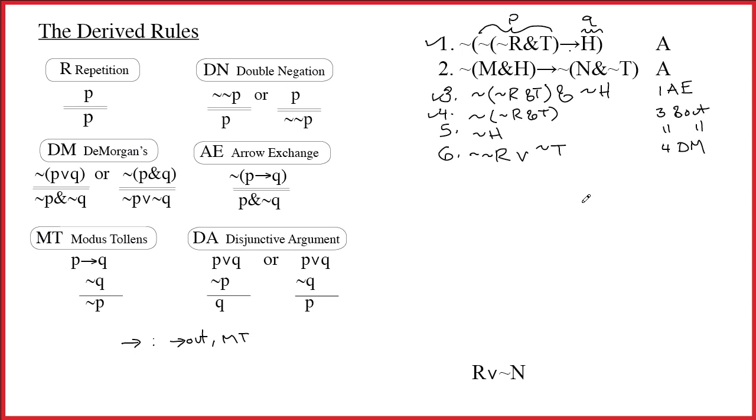Well to do arrow out on line 2, we would have to have tilde M and H. And obviously we do not have that right now. Yes, if you're super creative, you could actually build it. But that's not something I'm encouraging you to do. So we can't do arrow out. Can we do modus tollens? Well to do modus tollens, what would we need to have? Just looking at line 2, we can recognize that it would be tilde tilde N ampersand tilde T. To do modus tollens, you have to have the negation of the Q part. Q itself is everything after the arrow. So just take everything after the arrow and add a tilde to it. And that's what it means to have tilde Q. So I take a look. Do I have tilde tilde N and tilde T? And the answer is I don't. And right now I can't build it either. However, we may end up building it briefly.